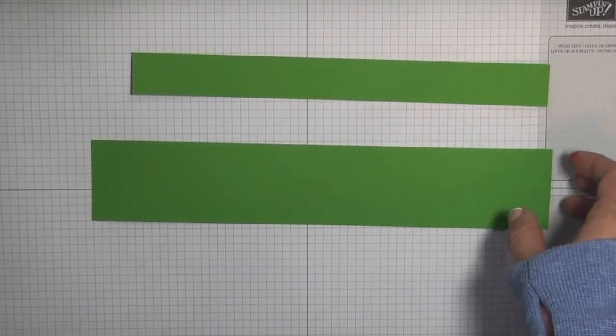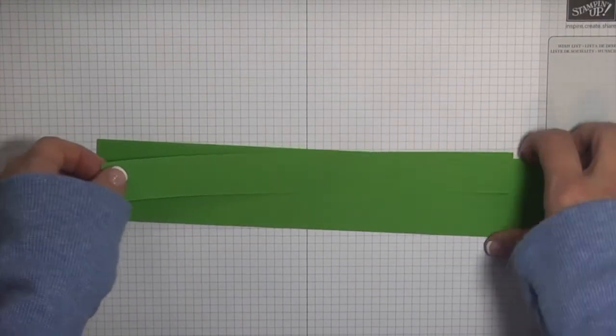And then this second strip is going to be 11 inches by two inches. And so what we're going to do now is we're going to get out our simply scoring tool and we're going to do some scoring.